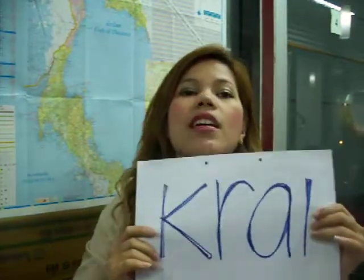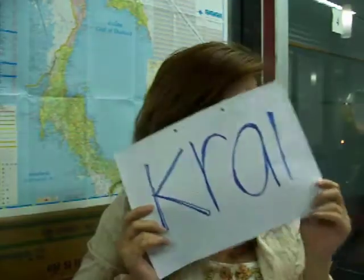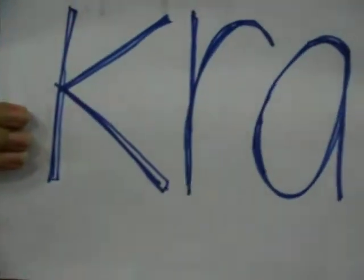The next one is 'who.' Who in Thai is ใคร. For example: 'Who called me?' — Who called me? I don't know.